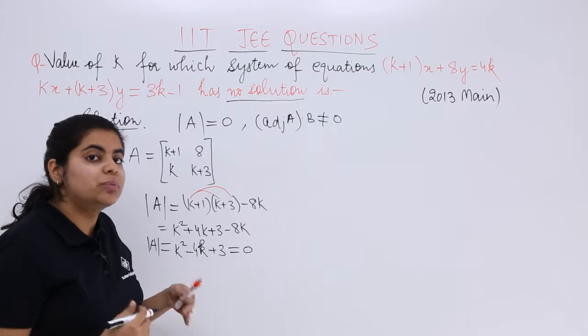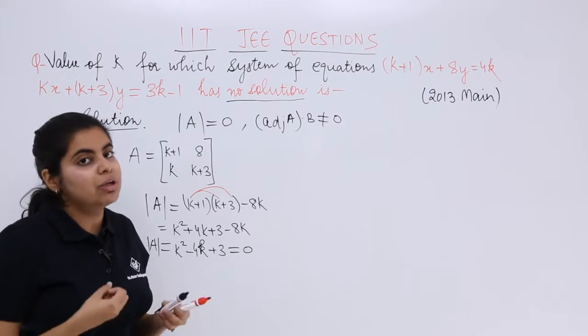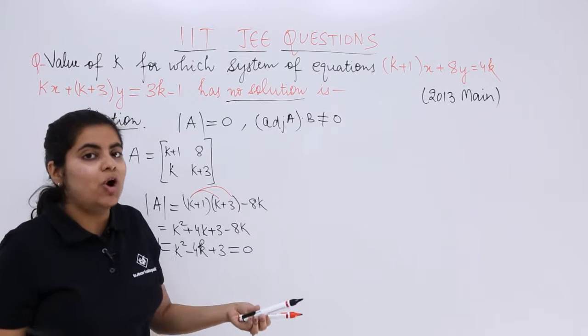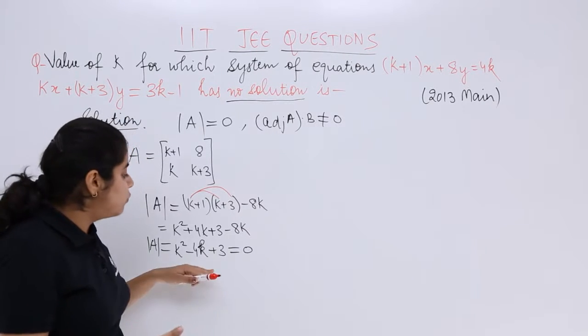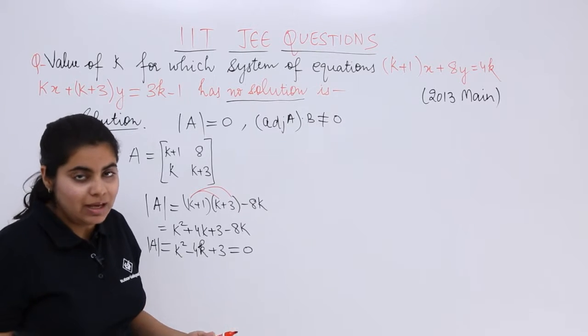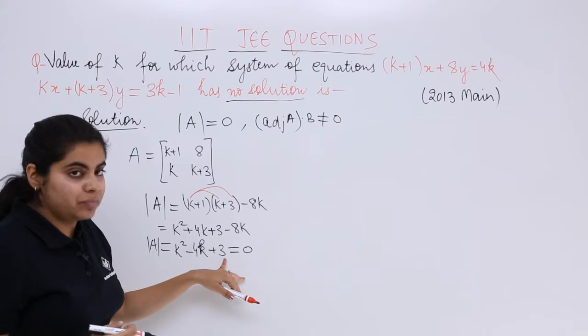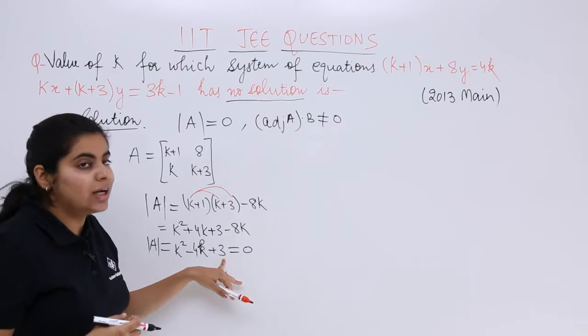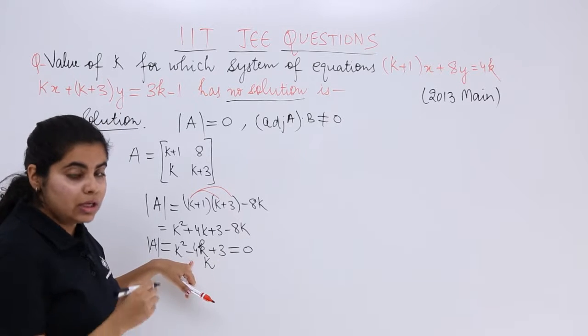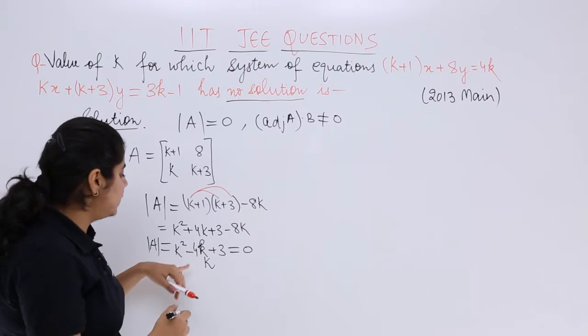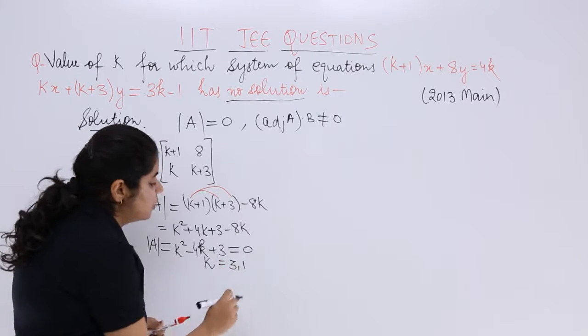After putting it equal to 0, we'll have 2 solutions. Because it's a quadratic equation, you can go by splitting the middle term or by quadratic formula, whatever method suits you best. I see that the sum and product are known to me. The product of roots is 3, the sum is 4.